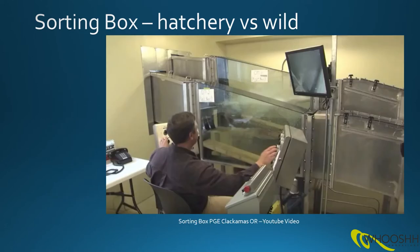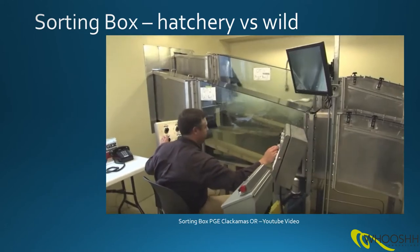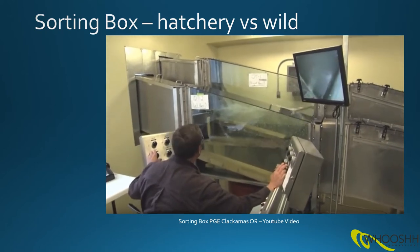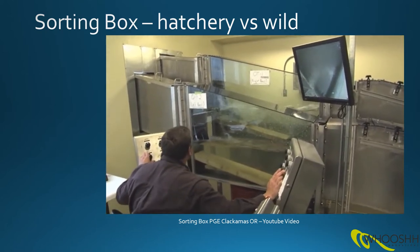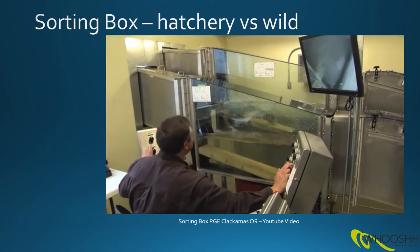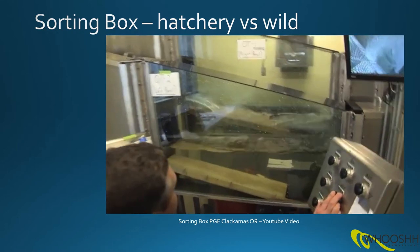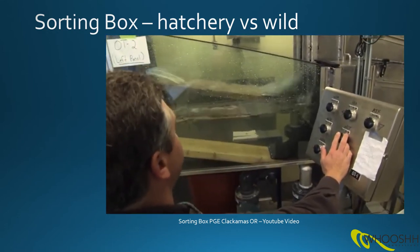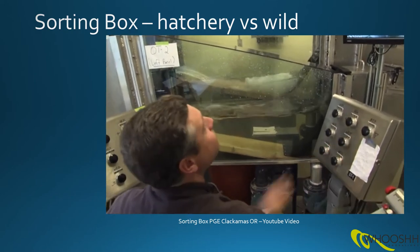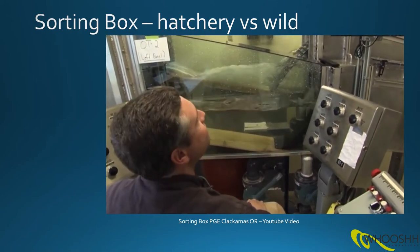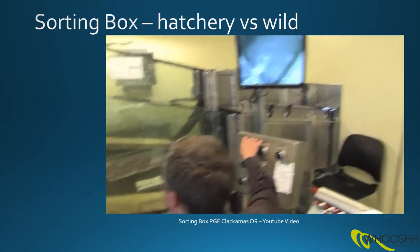In this sorting box example on the Clackamas River at a PG&E facility, fish are diverted from the main ladder over a false weir and through one of two sorting boxes where they are observed by the operator and sent to different destinations depending on whether they are hatchery or wild fish.